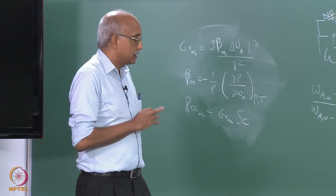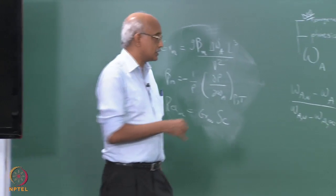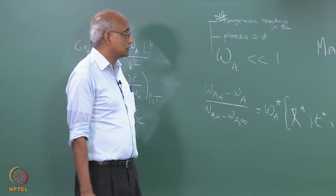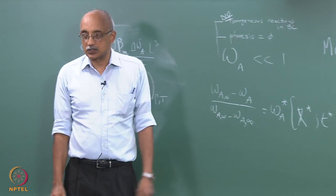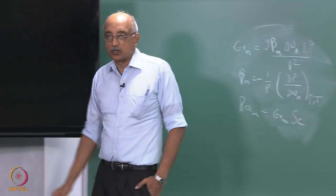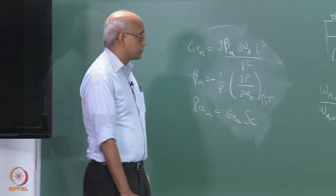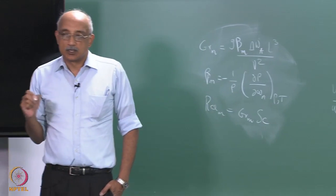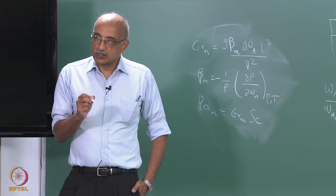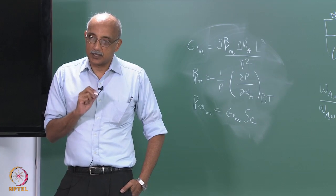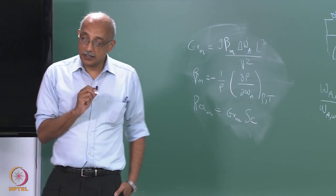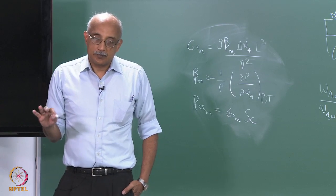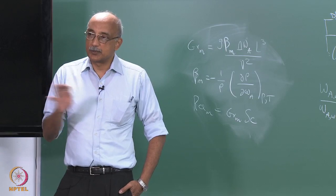We will look at the effects of all three conditions: what happens when ω_A is not much less than 1, when phoretic phenomena are not negligible, and when homogeneous reactions are occurring, and how each affects deposition characteristics. So far we have been focusing mostly on the energy-to-mass transfer analogy.